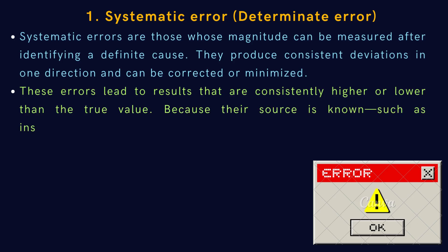Because their source is known, such as instrument miscalibration, procedural flaws, or human mistakes, they can often be measured, corrected, or minimized.